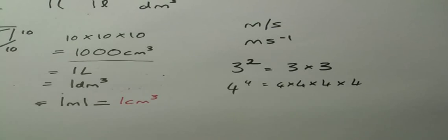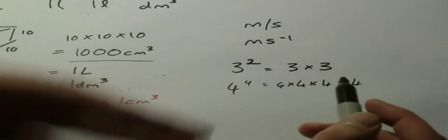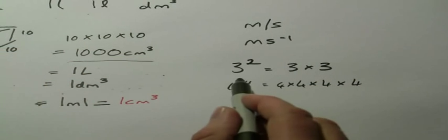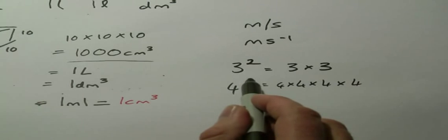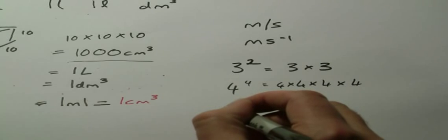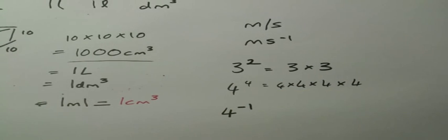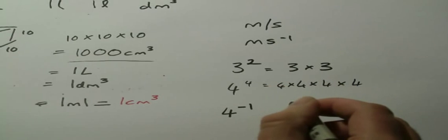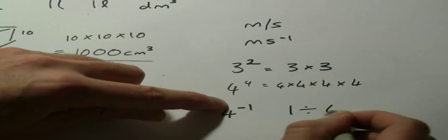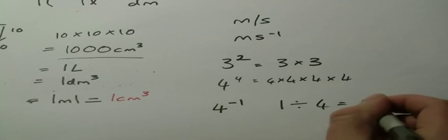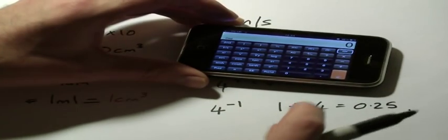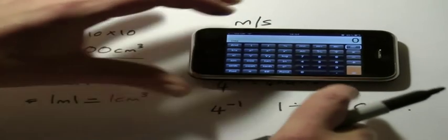If I have a negative exponent, if I have a negative number up here, think of it as dividing doing the opposite of multiplying. Putting a negative number on here just makes it do the opposite of multiplying, which means dividing. So if I've had that number four to the power negative one, it's the same as saying one divided by four, which equals 0.25.